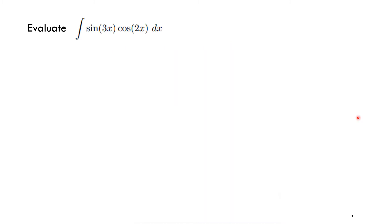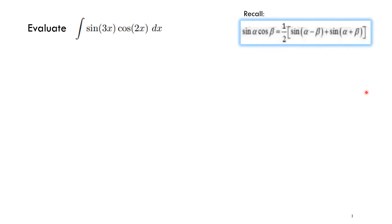For example, we are asked to evaluate the integral of sin(3x)cos(2x) dx. Recall the formula: sin(α)cos(β) = ½[sin(α − β) + sin(α + β)].